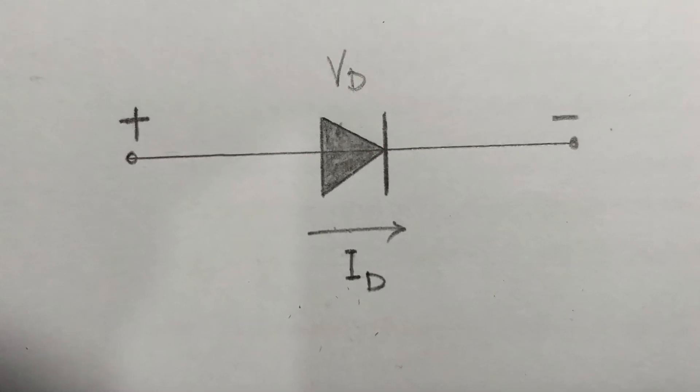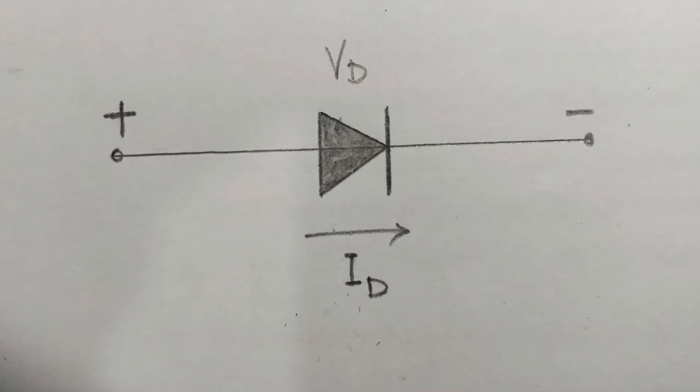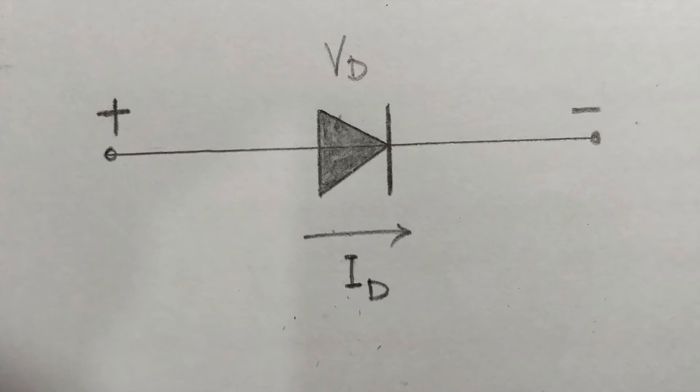A diode is the simplest of semiconductor devices and the first device to be introduced. It has various vital roles in the design of electronic systems.